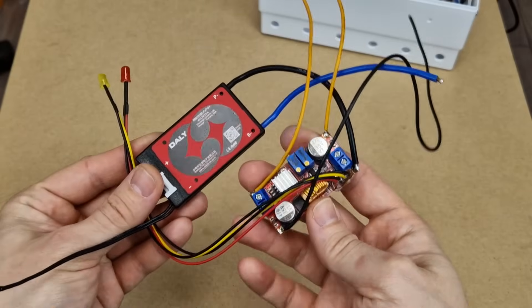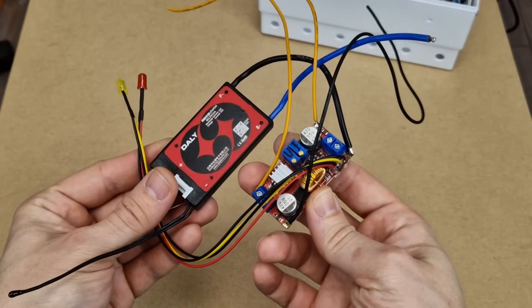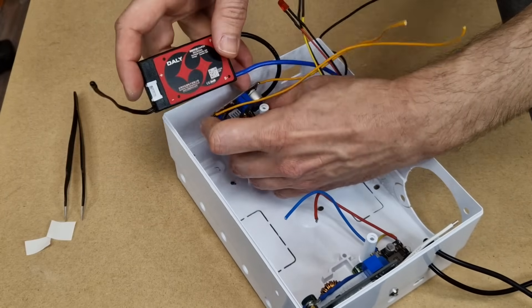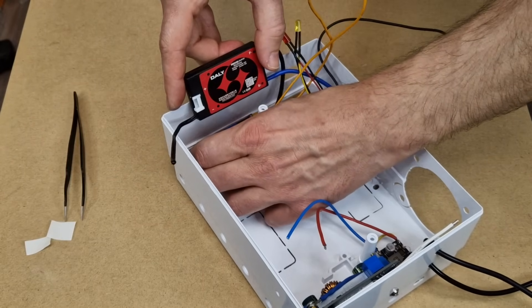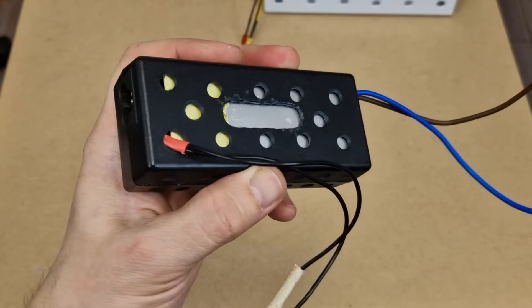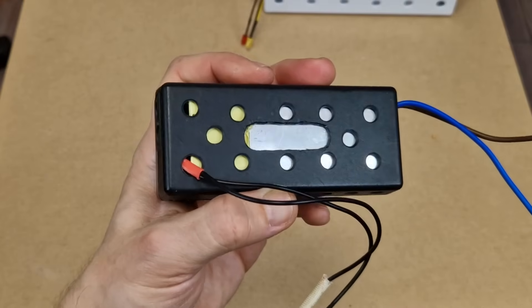I soldered the negative wire from the BMS directly to the converter. I will install the charging module and BMS board in the left side of the UPS case. The laptop charger, or UPS charger is next. You can see the case has a new cutout.